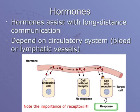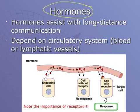Other than local communication, we have long-distance communication, and that's covered by hormones. Hormones aren't just active during puberty — they're active all of the time. They help your body maintain homeostasis, and they travel through your circulatory system.